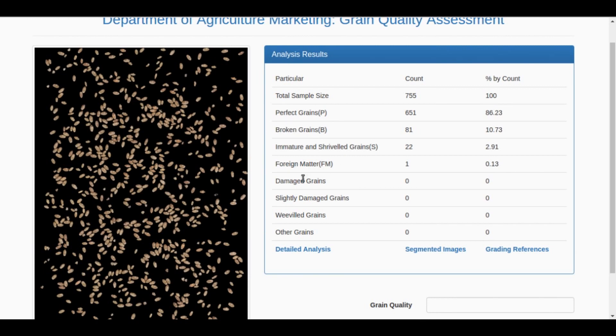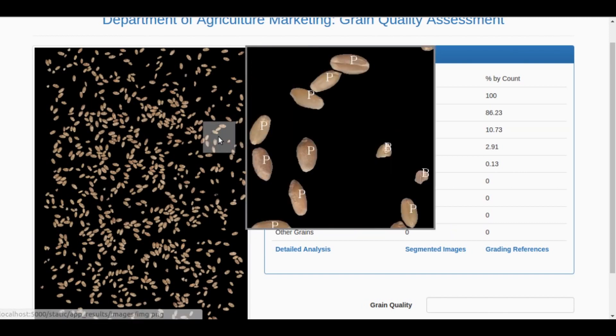This includes perfect, broken, shriveled, foreign matter, damaged, and other grains. The result is shown both as count and percentage.